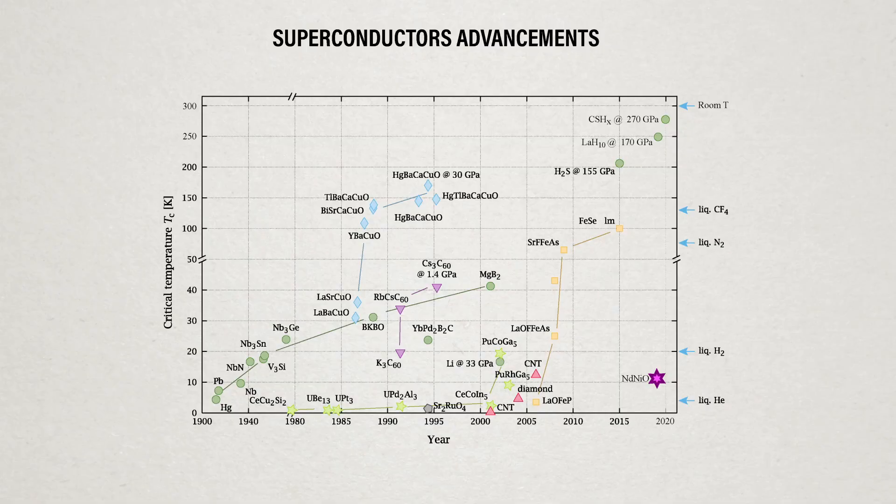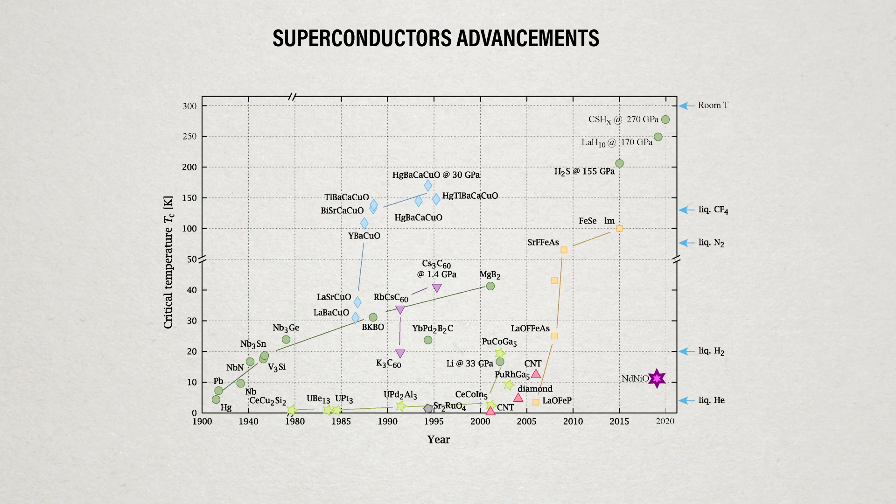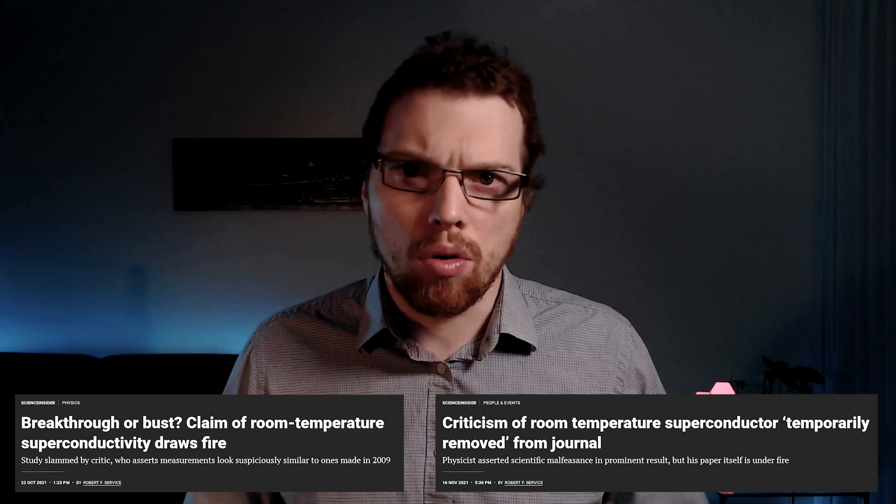But this goal has eluded us, with the only potential room temperature superconductor that's been measured requiring hundreds of gigapascals of pressure, which is just simply not practical, and these results are being called into question anyway. To find more potential room temperature superconductors, we need to better understand how unconventional superconductors work.